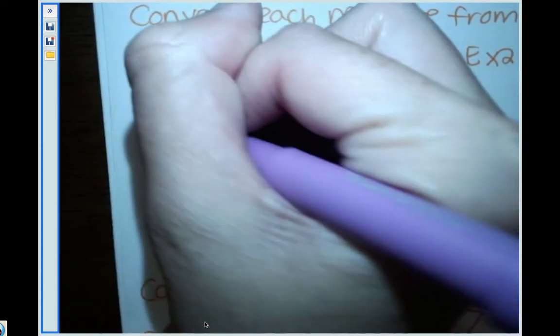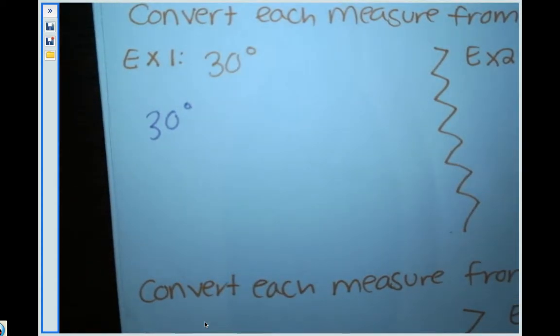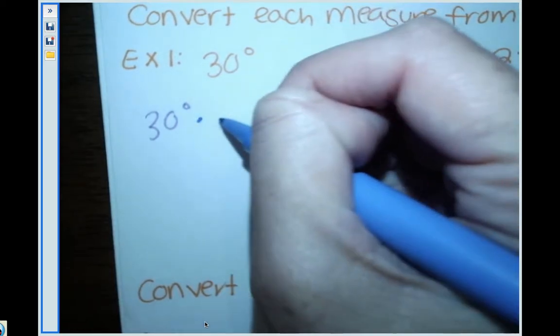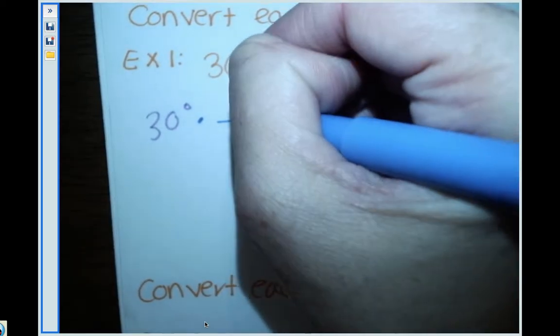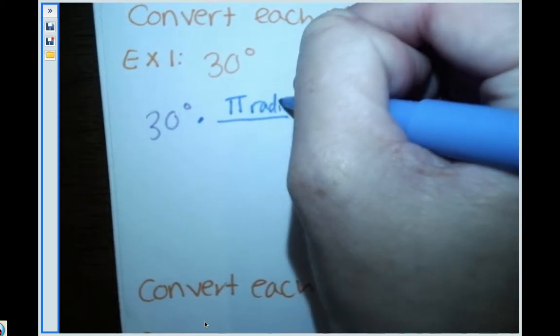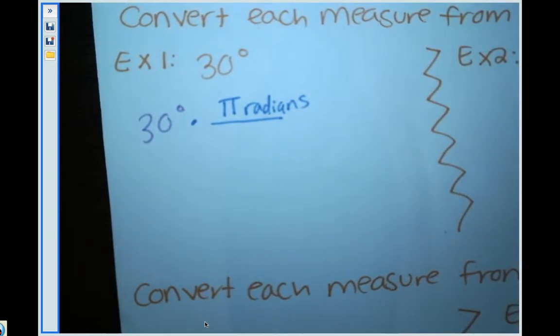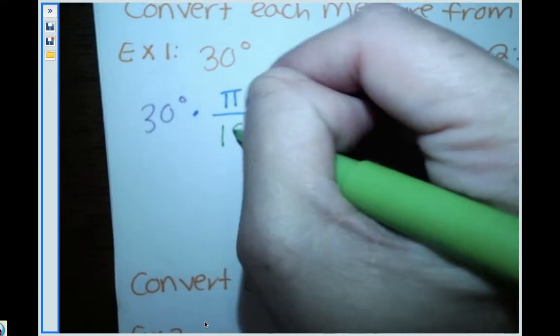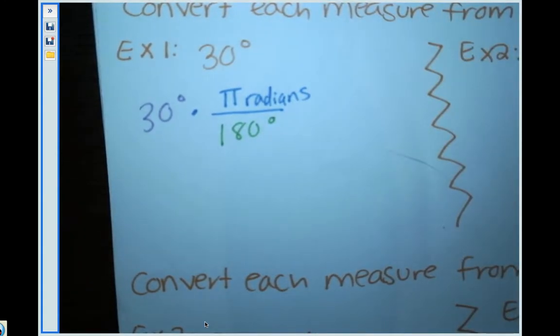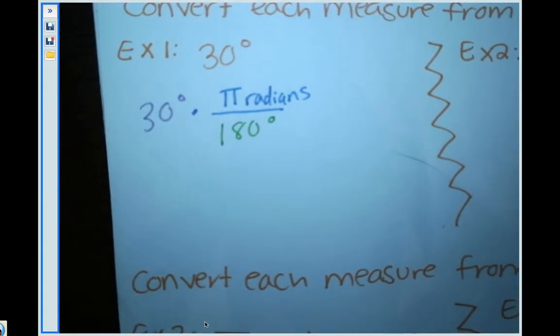So I'm going to start with my degrees and all we're going to do is multiply that by π radians over 180 degrees. And after we do that and simplify it down, we'll be done.